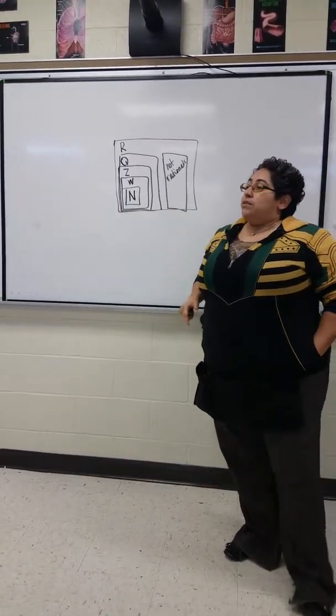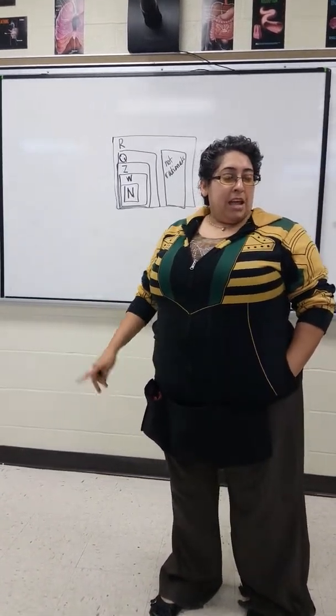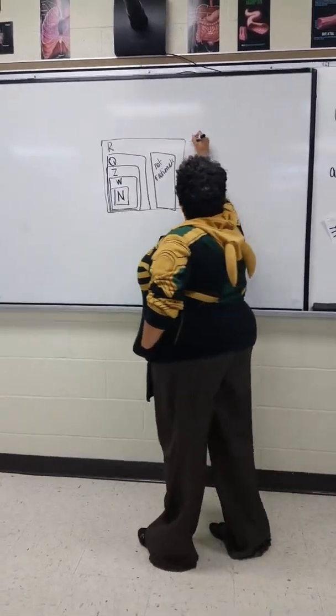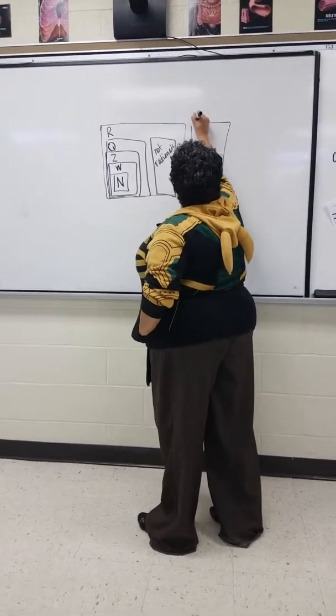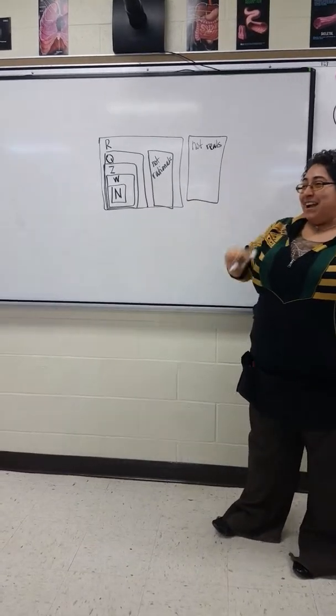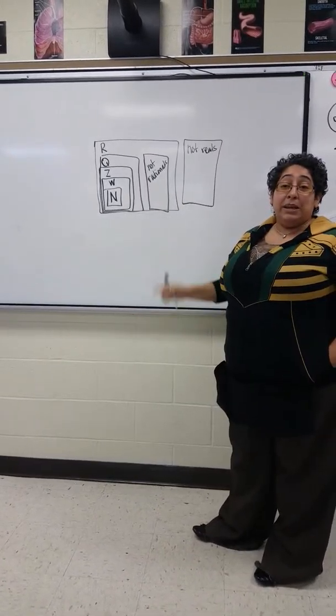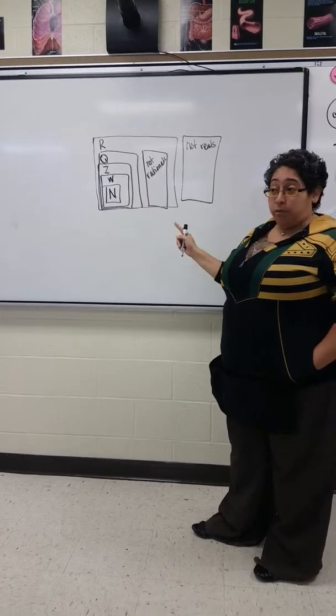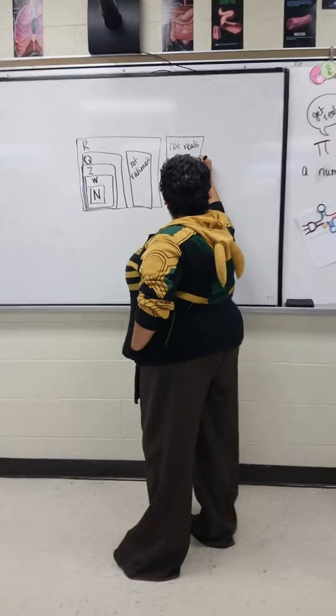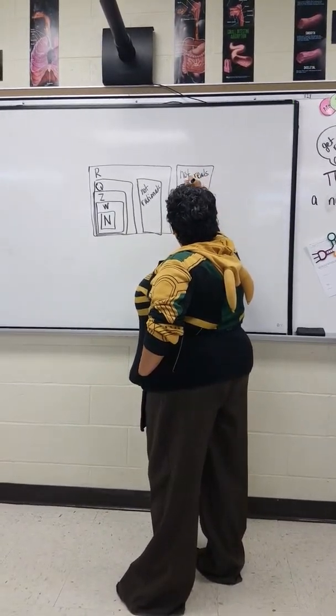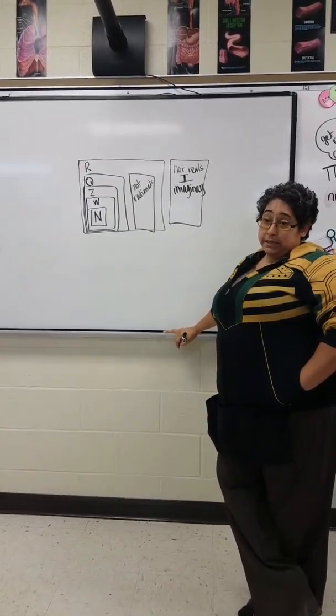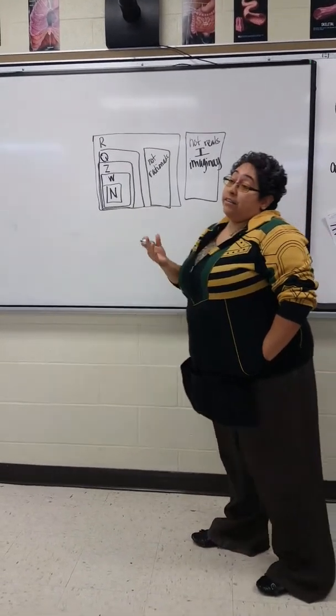I had someone go, N for natural, totally get it. W for whole, totally makes sense. Why are the integers Z? And I went, I'll tell you later. Hi, today's later. Let me finish the diagram, and then we'll come back as to see why it's not I. That's why integers have to be Z.